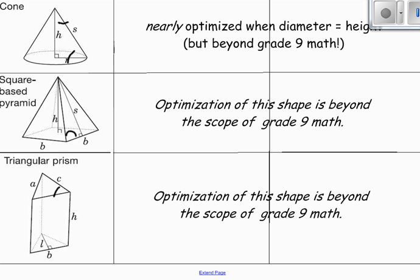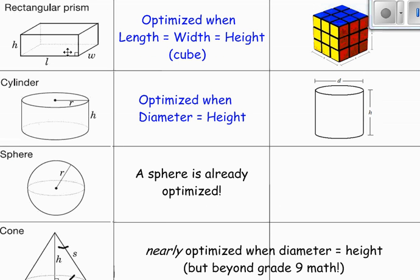So, what about these guys? Cone, square base pyramid, triangular prism? We're not going to optimize those in grade 9. Unfortunately, there's just a lot more going on here because of the angles and all that fun stuff. So, we're not going to be worried about any optimization of the cone pyramid or prism or triangular prism. So, really, in three dimensions, we only have to worry about a rectangular prism, which becomes a cube, and a cylinder, which becomes this optimized cylinder with diameter matching height. So, that's what you need to know. Let's look at some questions.